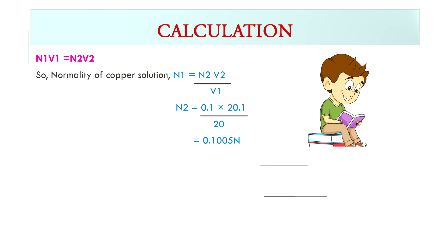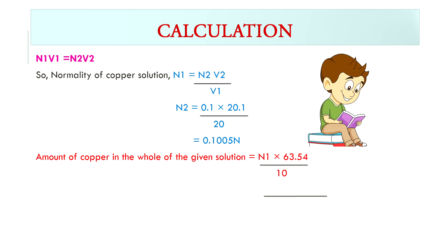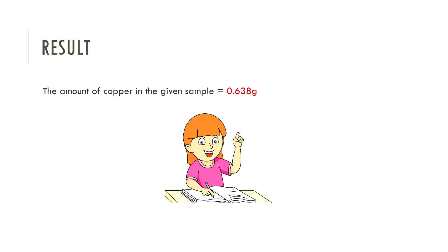The normality 0.1005 refers to the copper solution (brass solution). The amount of copper in the whole of the given solution is N1 × 63.54 / 10. The amount of copper in the given sample is equal to 0.638 grams.